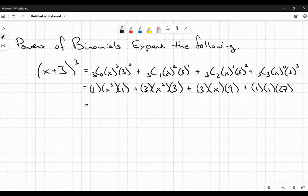And so now that we've got each individual factor for each term evaluated, now I'm going to multiply that all together, and we are going to simply get x cubed plus 9x squared plus 27x plus 27.